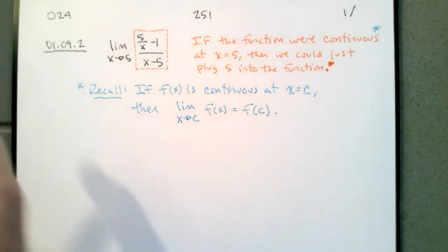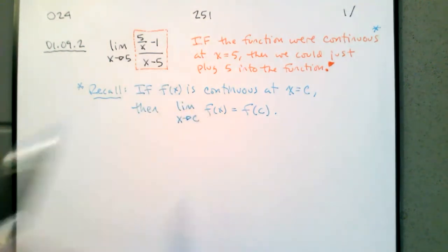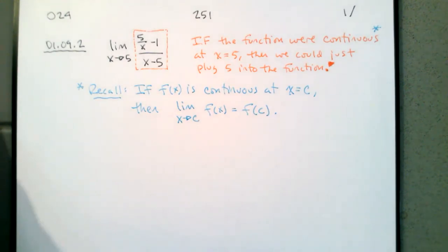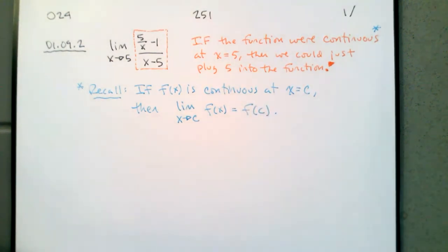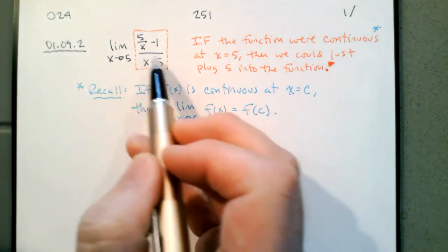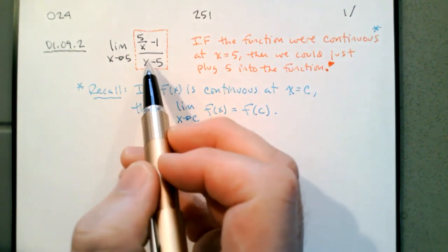What we notice about the function at hand is that we can't just plug five in — we'll end up dividing by zero, and we're not allowed to do that. That gives us something undefined. Sometimes when we divide by zero we end up with infinity, sometimes zero, sometimes negative infinity, sometimes anything in between — that's why we cannot define division by zero. So we need alternate strategies for functions that are not continuous at a point.